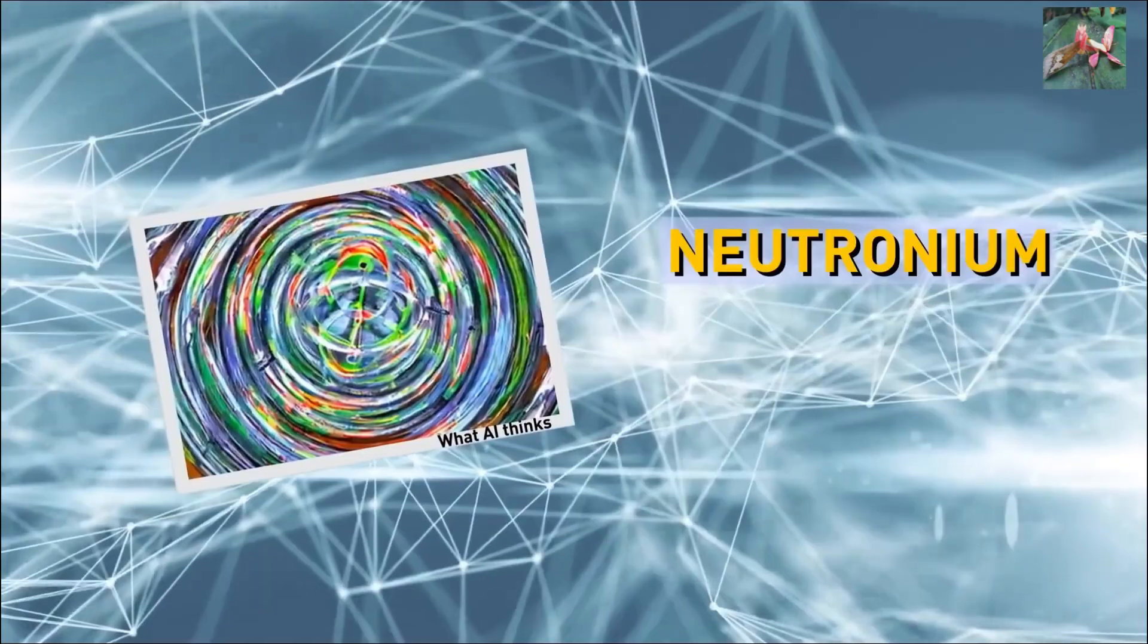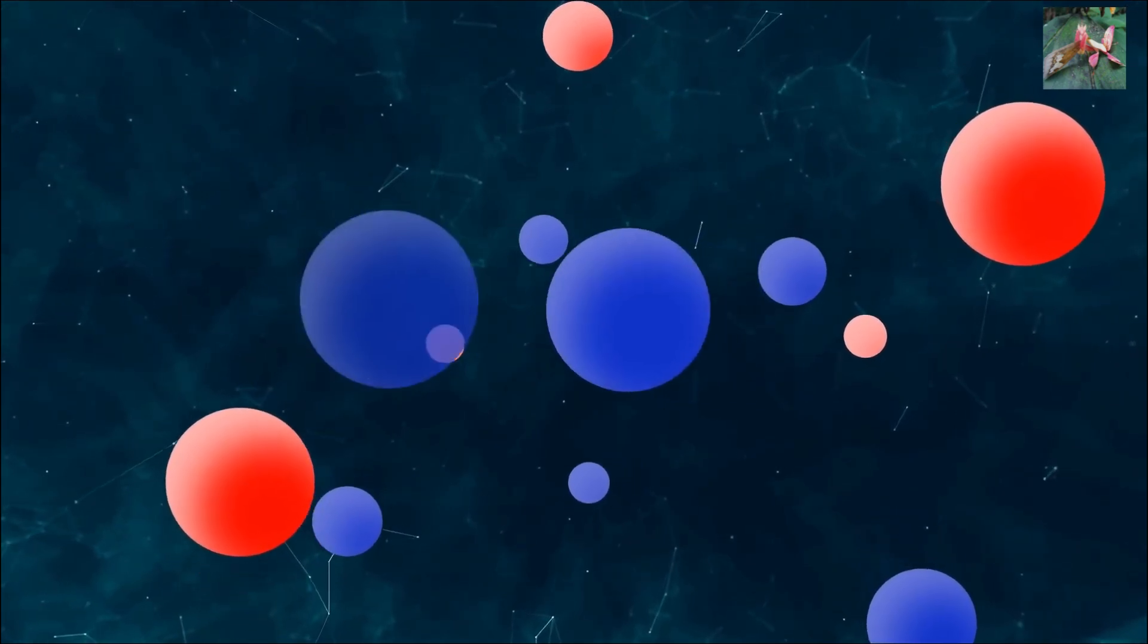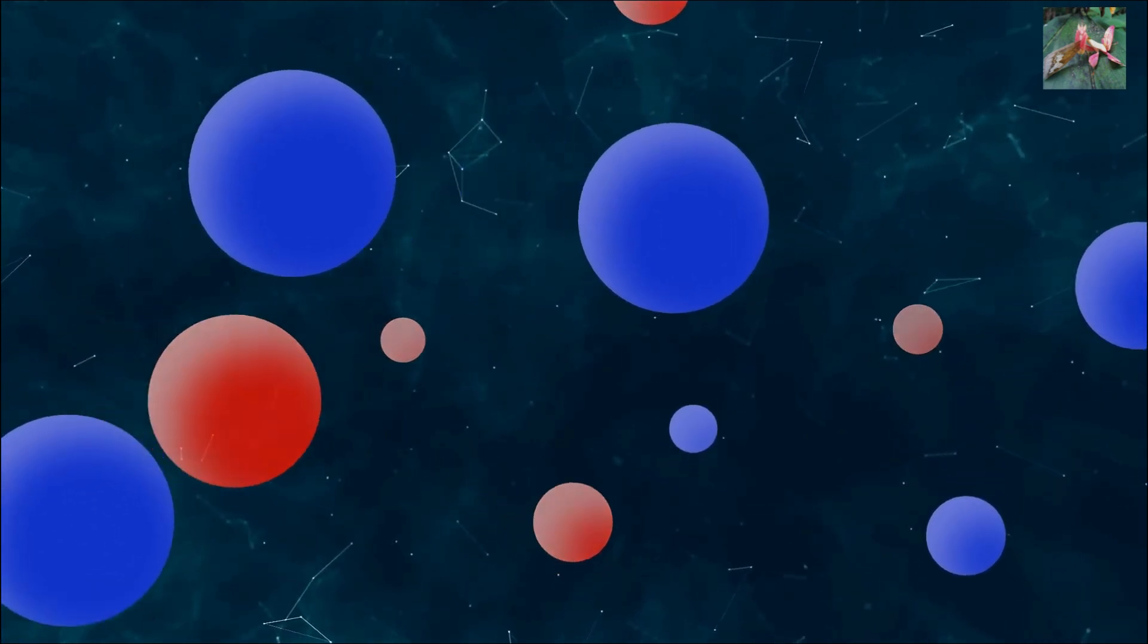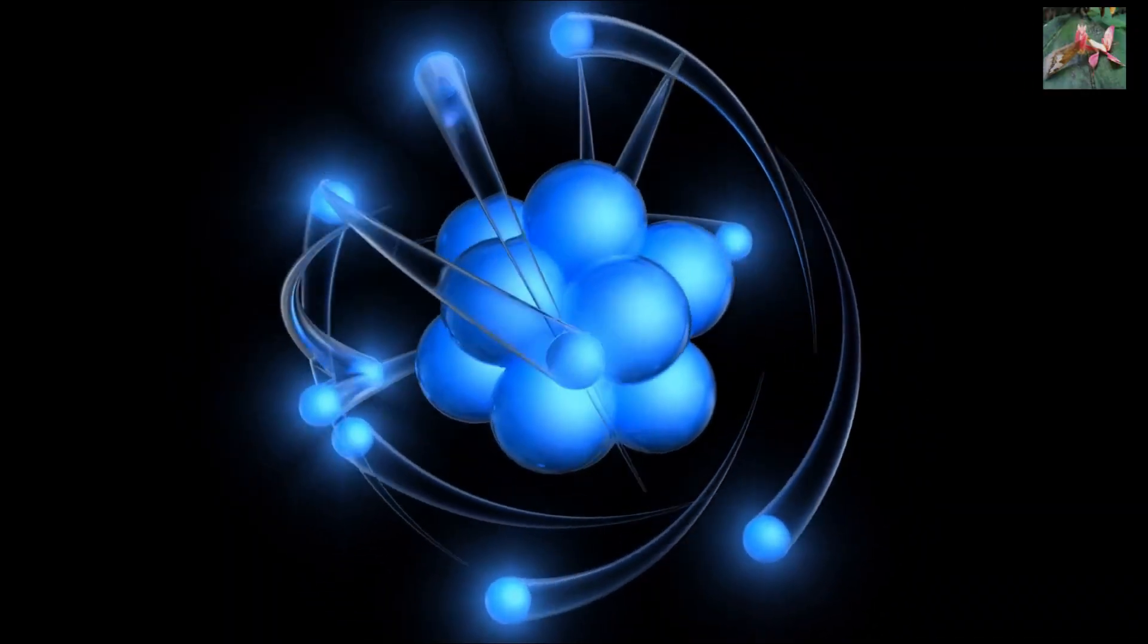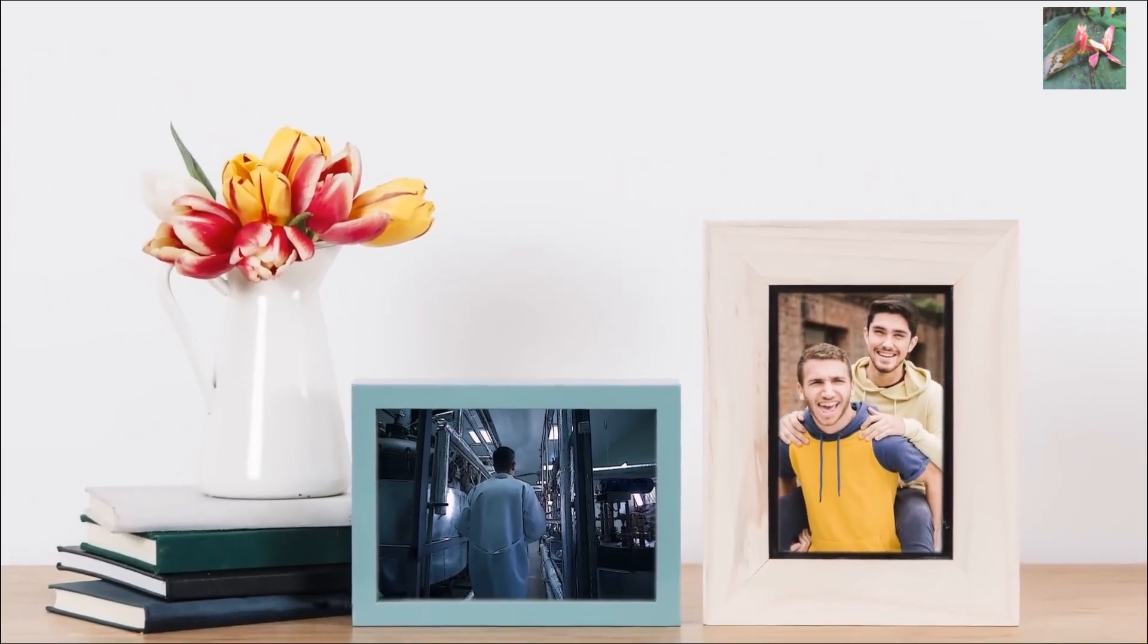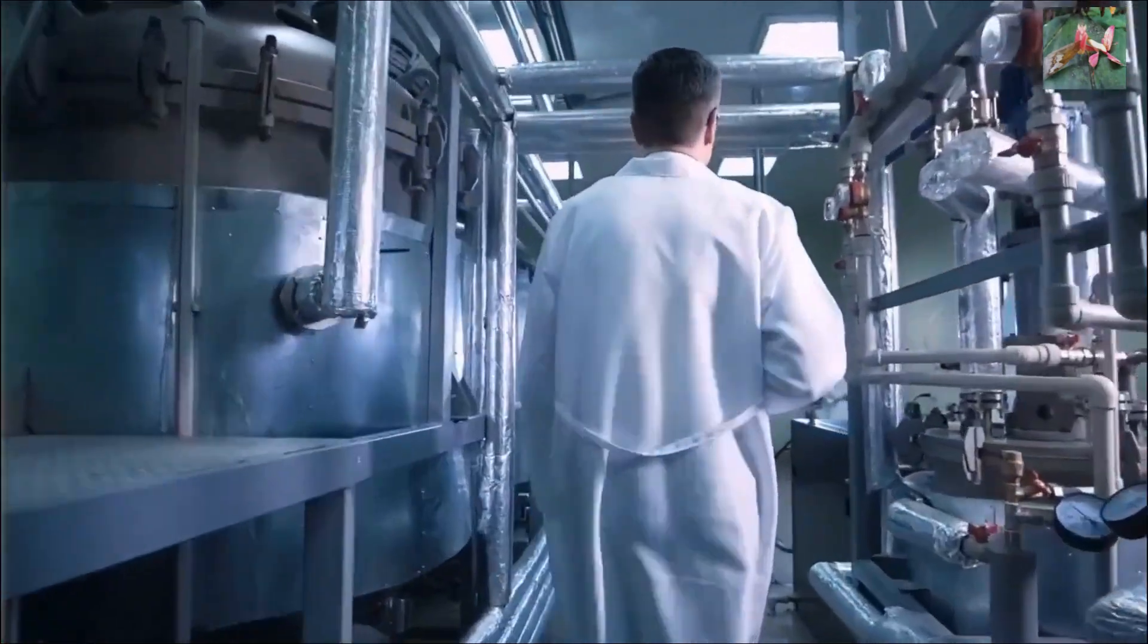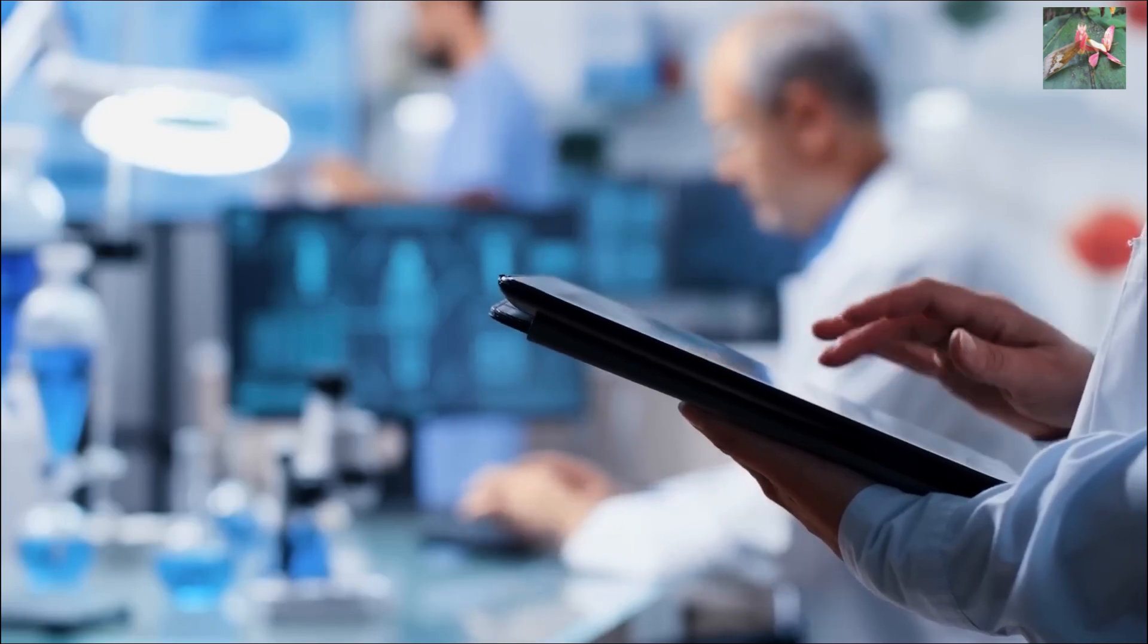And finally, we get to the last weird state of matter called neutronium. Imagine you have a bunch of balls. Some are red, and some are blue. They're all bouncing around, constantly colliding with each other. Now let's take away all the red balls and keep only the blue ones. That's a bit like neutronium. Neutrons are tiny particles that hang out in the nucleus of an atom, along with protons like a cozy group of friends. They're like the chill buddies of the atomic world. They're neutral, meaning they don't have any charge, hence the name. They play an important role in holding the nucleus together and determining the properties of different atoms.